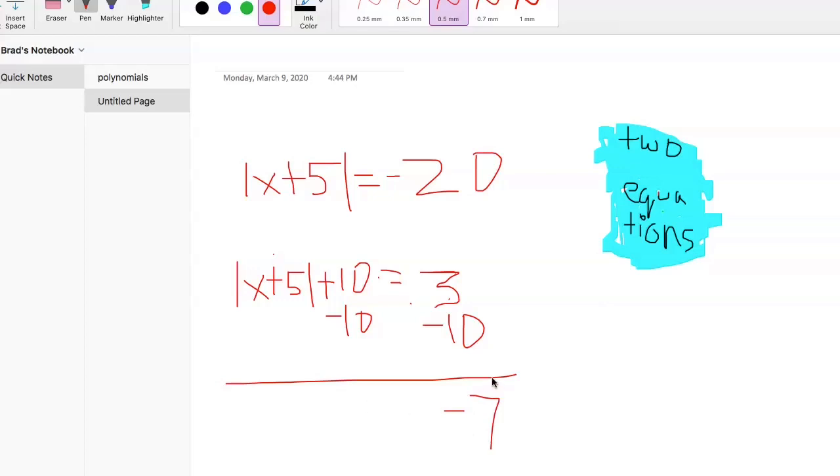And once we have that, we have absolute value of x plus 5 equals negative 7. Once we have that, the absolute value cannot be a negative. Once we see that it's again that empty set answer. So once we see it equaling a negative, once we have the absolute value by itself equaling a negative, the answer is always going to be empty set. You'll either see an answer that looks like the zero with a slash through it or the words empty set. That will be your correct answer.